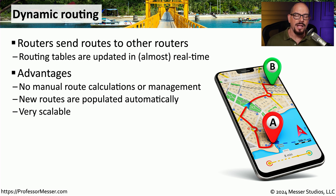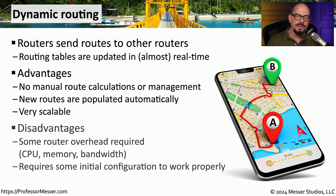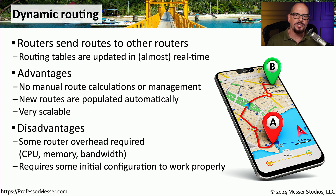Anytime you bring a new router online, all of the other routers will automatically know where the new route is. And if you happen to remove a router from the network, all of the routers also know that that route is now no longer available. There is a bit of overhead required inside of the router to automatically discover these routes and update the routing tables, which will require some CPU and memory. So you may need to do additional monitoring to make sure your router can handle that load.